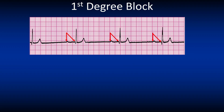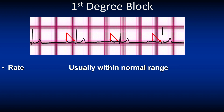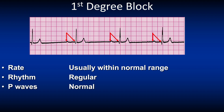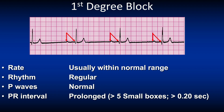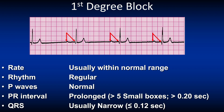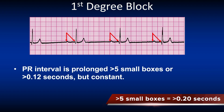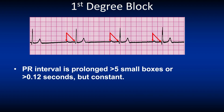Let's review a first degree block. The rate is usually within normal range, the rhythm is regular, P waves are present, and there is one P wave for every QRS. The PR interval is prolonged, meaning more than five small boxes or more than 0.2 seconds, but it remains constant. The QRS is usually narrow and there is one QRS for every P wave. Have a look at the red highlighted arrows — we see the PR interval is prolonged at about seven small boxes or 0.28 seconds. So the main concept in first degree block is that the PR interval is prolonged but remains constant.